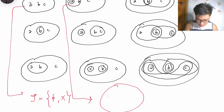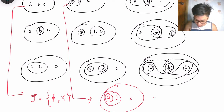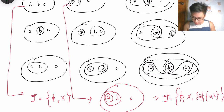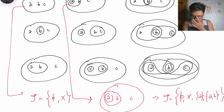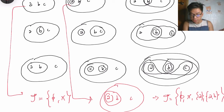For the second figure, tau = {empty set, X, {a}, {a,b}}. The presence of the empty set and X satisfies condition one. The union of {a} and {a,b} gives {a,b}, which is present in tau. The intersection of {a} and {a,b} gives {a}, which is also in tau. So whatever union or intersection you take of elements in tau, the result stays in tau — therefore this tau is a topology.